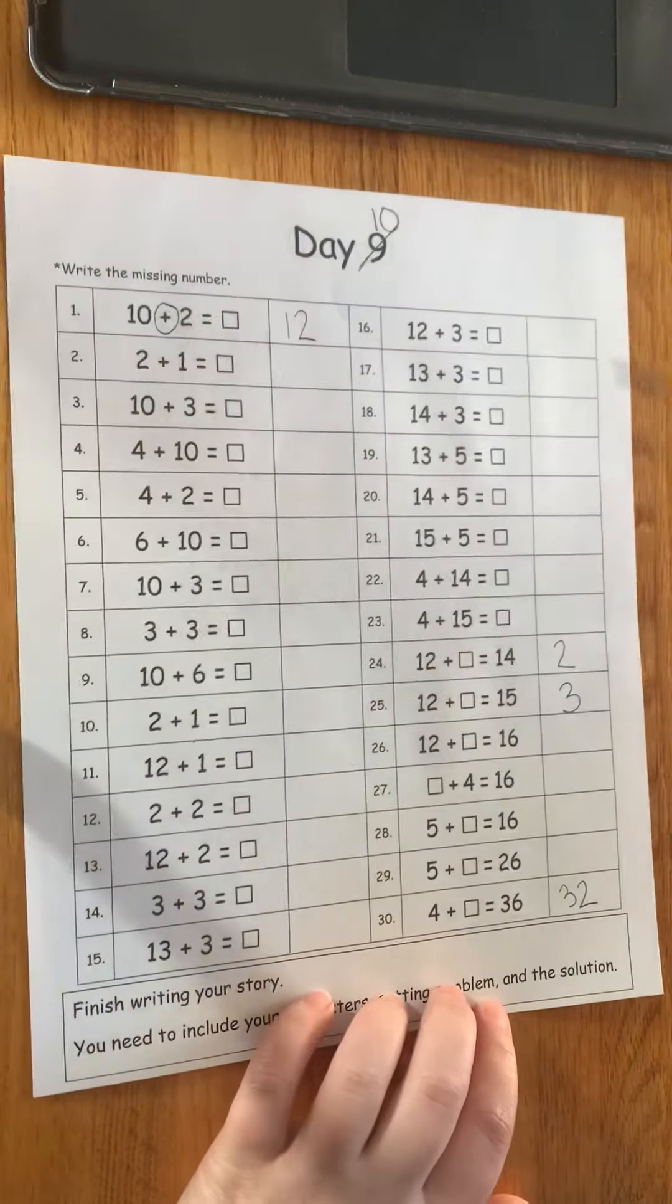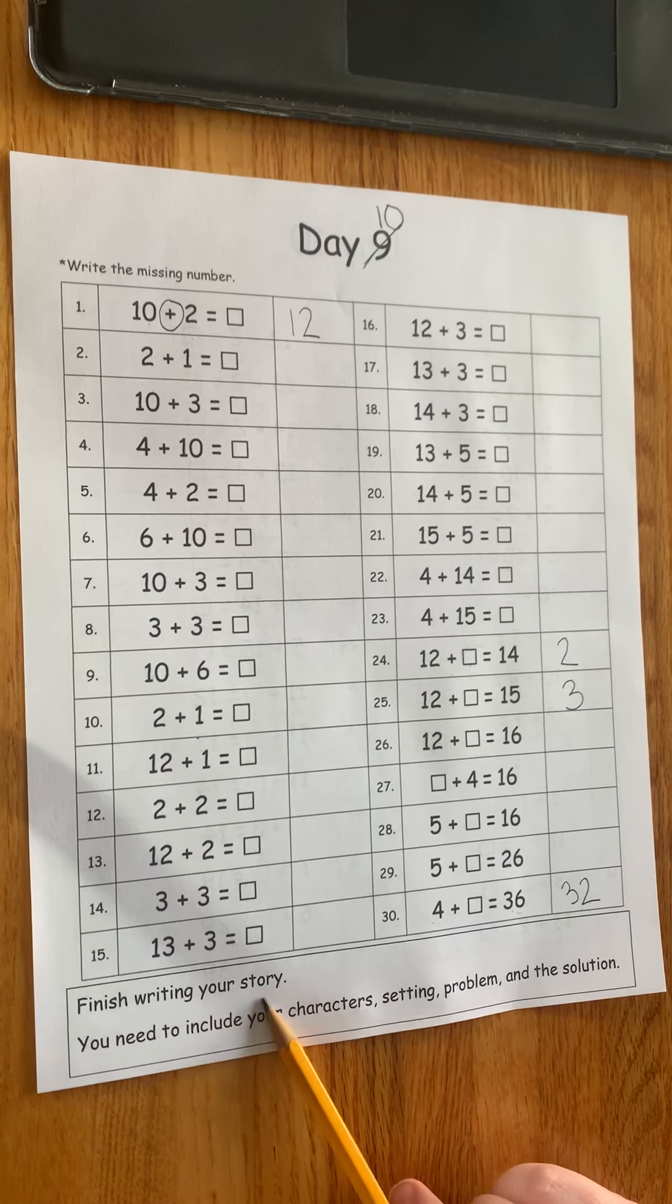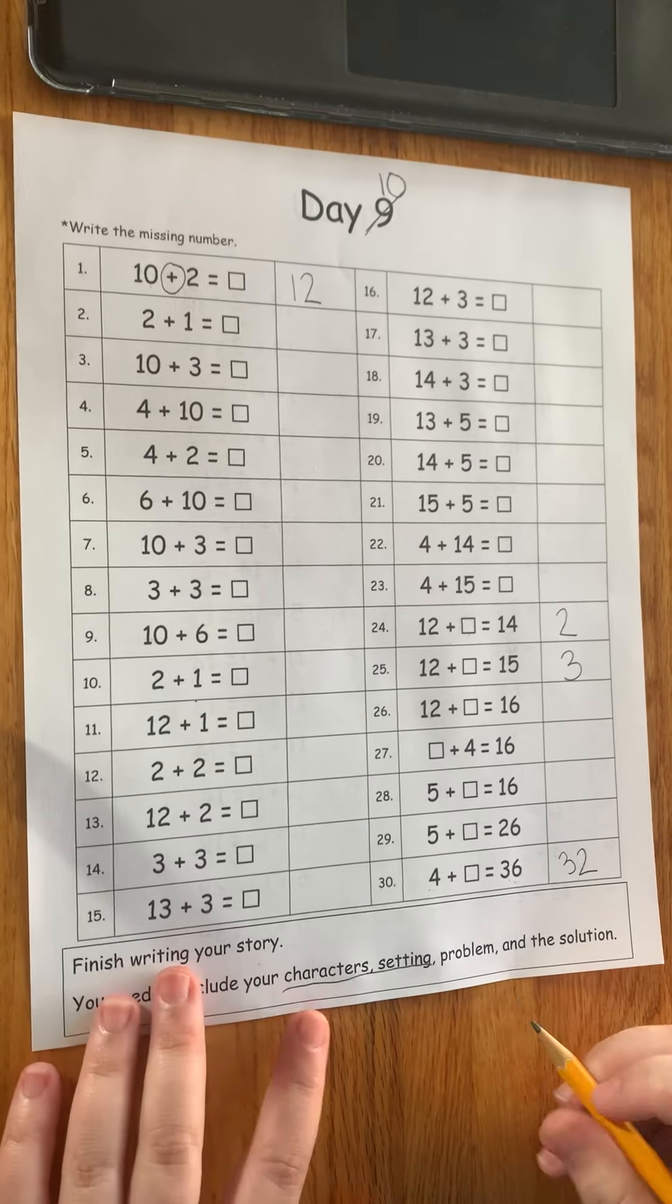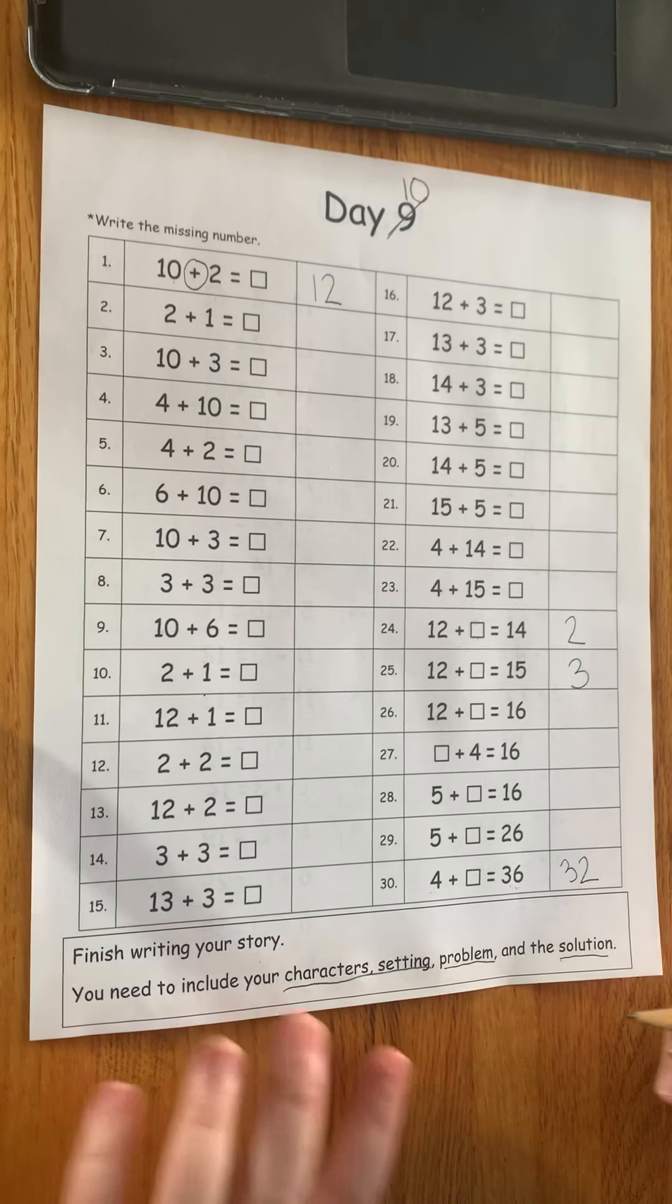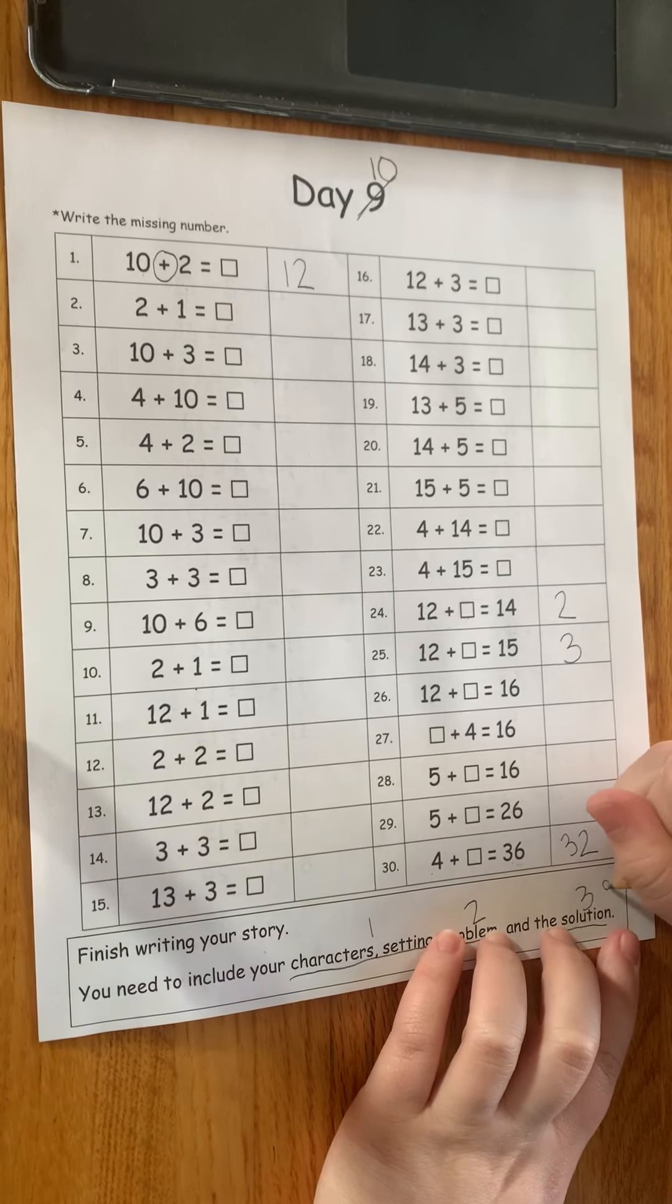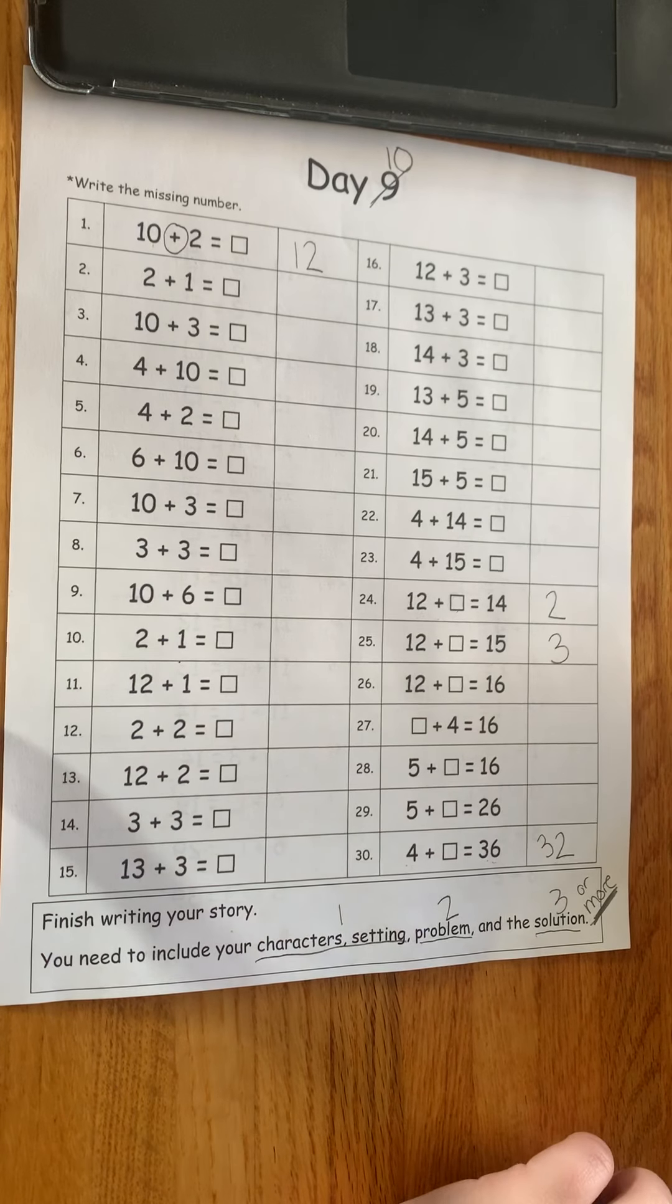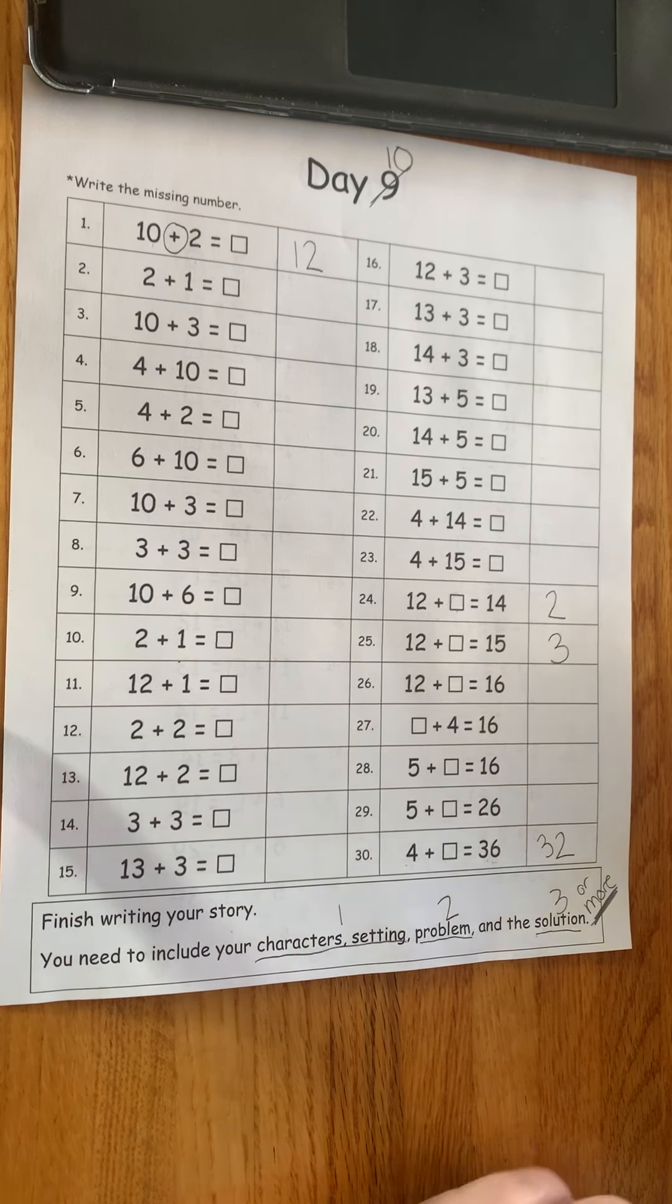So make sure you take a picture of your completed math work and you need to finish writing your story. You need to include your characters and setting. That should be at least one sentence, if not more. Your problem should be a sentence and your solution should be a sentence. So I should have one, two, three, or more. At this point in the school year, we're really counting on the more sentences. I should have a story with maybe five or six sentences in it, okay?